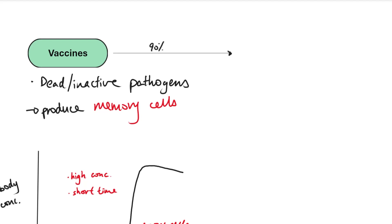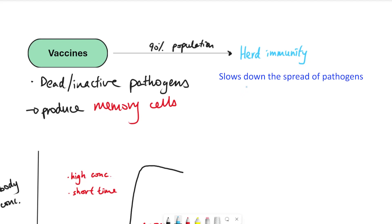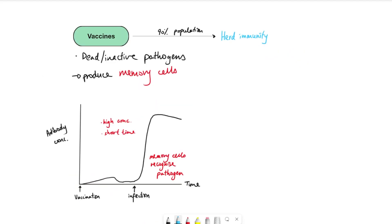If about 90% of the population are vaccinated, we reach something called herd immunity. Because most people have memory cells, the spread of the pathogen slows down or even stops completely. Even unvaccinated individuals are less likely to get the pathogen, because vaccinated people can kill it before transmitting it. A high proportion of vaccinated people slows down the spread of diseases.